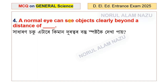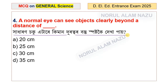A normal eye can see objects clearly beyond a distance of — the options are 20 cm, 25 cm, 30 cm, and 35 cm. The answer is 25 cm. A normal healthy eye can see objects clearly at a distance of 25 cm.